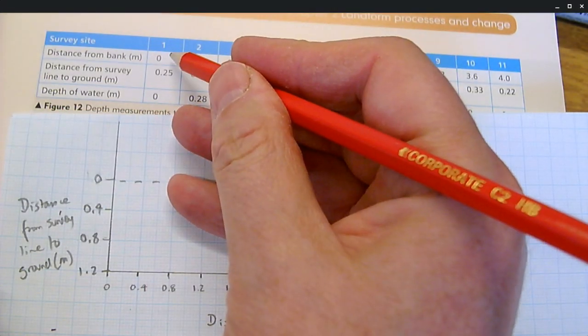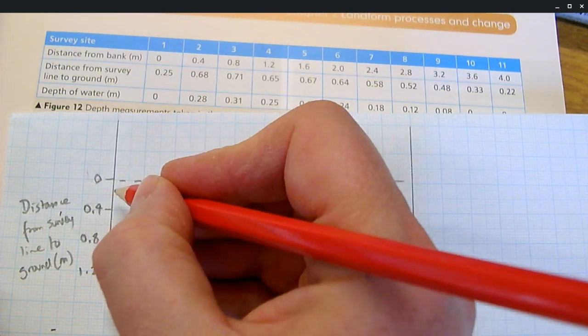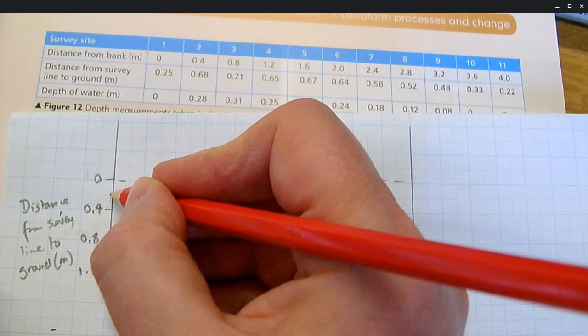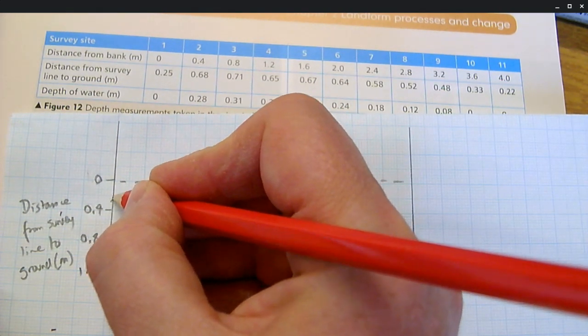So at 0, we've got a depth of 0.25. So that's going to be 0.2. It's going to be a little bit further down from there. I'm going to put my x there.